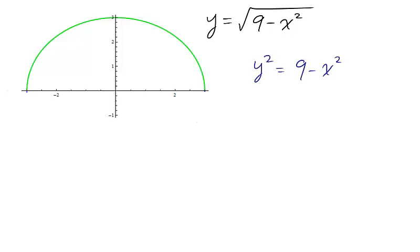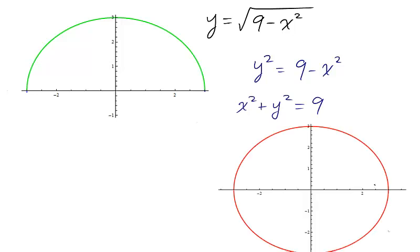Well, squaring both sides and moving x squared to the left hand side, we obtain the equation of a circle. Remember, this equation fails to be a function as a circle fails the vertical line test.